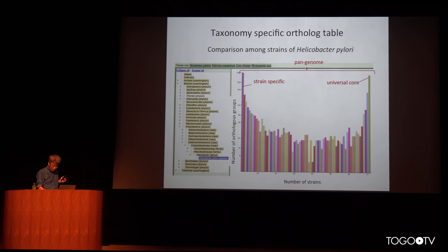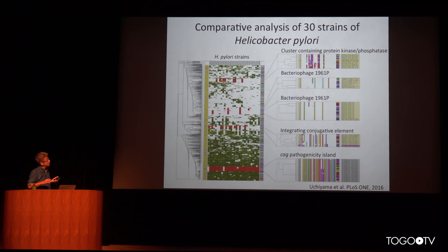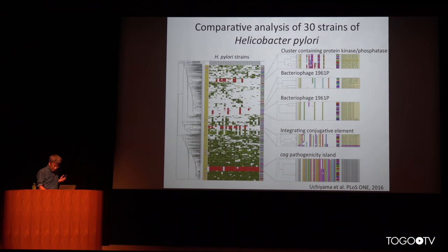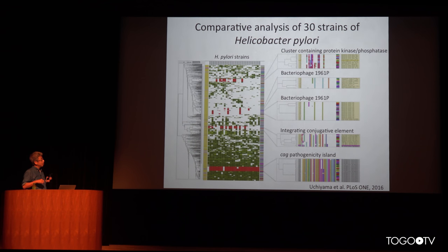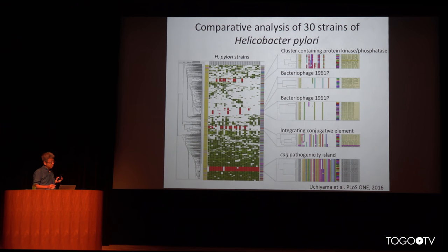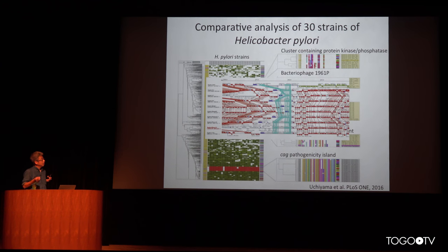This kind of analysis is very common. Here is an example of such analysis by ourselves — a comparison of Helicobacter pylori. The important thing is the pattern of conservation among intermediate cases. We classify ortholog groups according to the similarity of occurrence patterns, and also use chromosomal location proximity to group ortholog groups. This kind of analysis can identify many of the genomic islands.